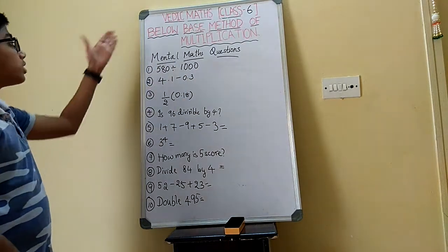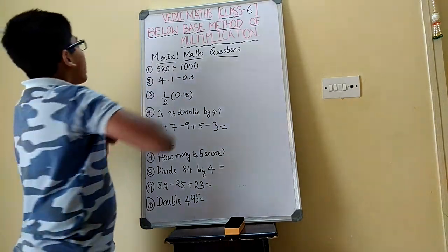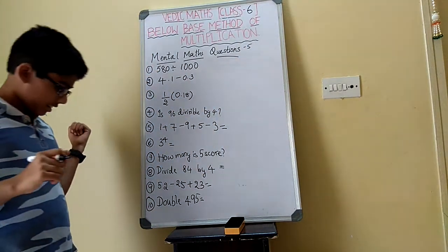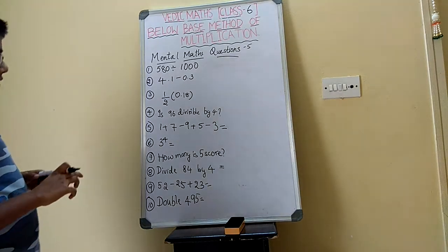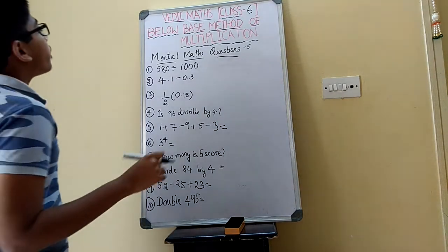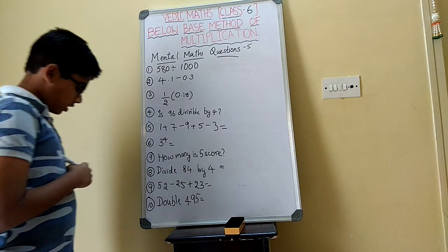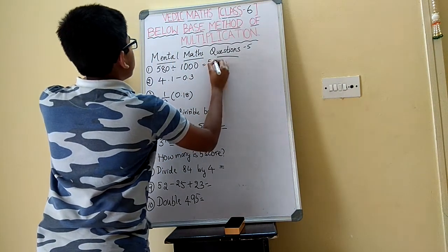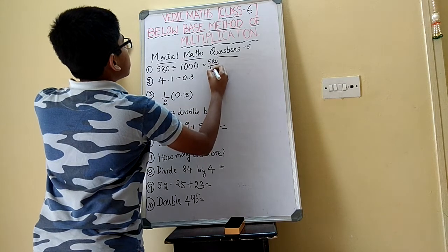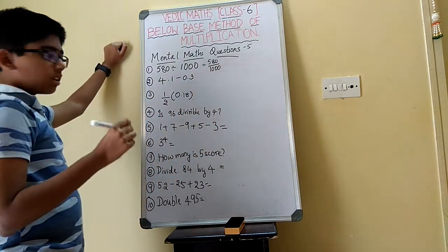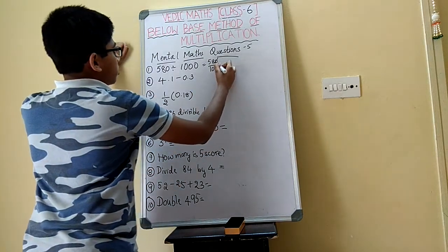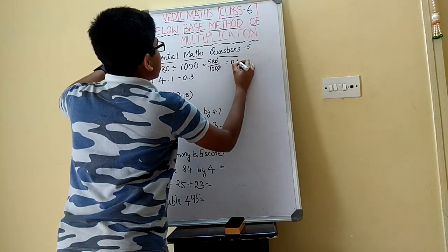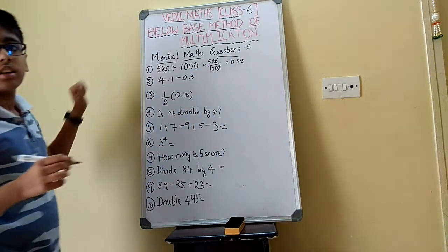Before going into that topic, we will discuss the answers to the mental math questions from the previous class. Day 5, first question: 580 divided by 1000. That is 580 by 1000, and when you cancel out the zeros, it is going to be 0.58.